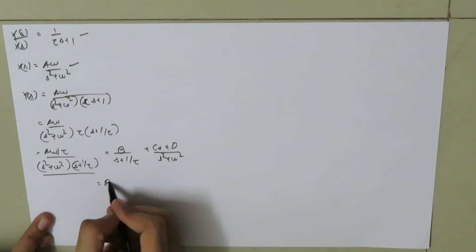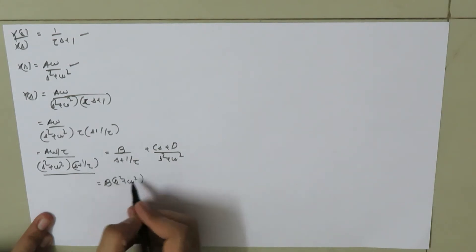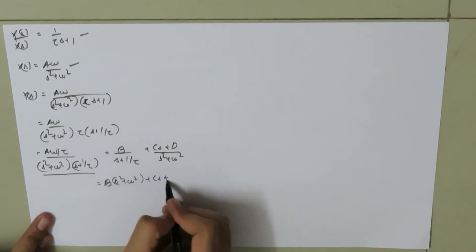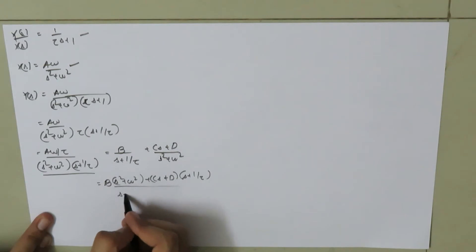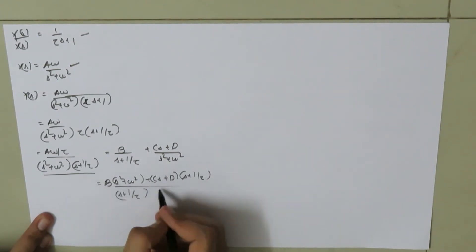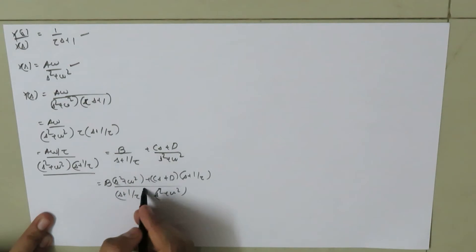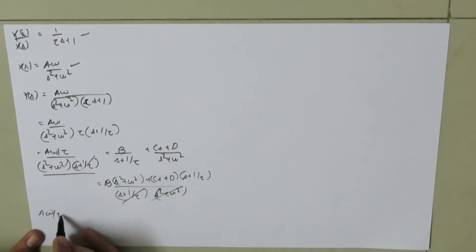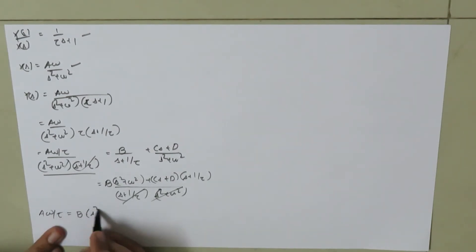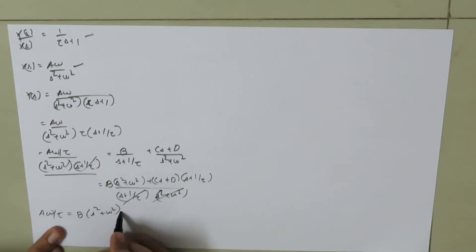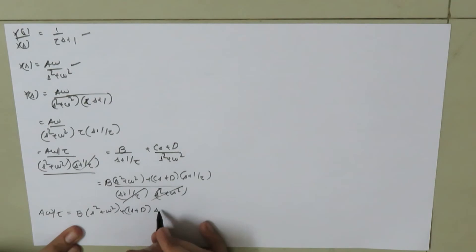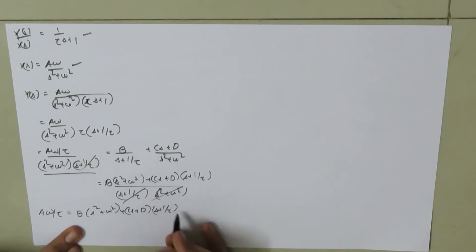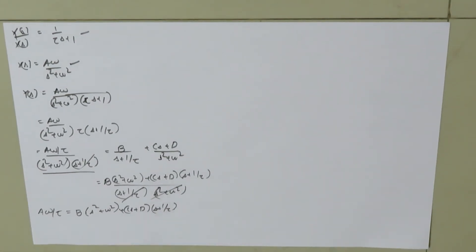Cross-multiplying gives: B times (s squared plus omega squared) plus (C·s plus D) times (s plus 1/tau) equals a·omega/tau. Now we need to find the values of B, C, and D.